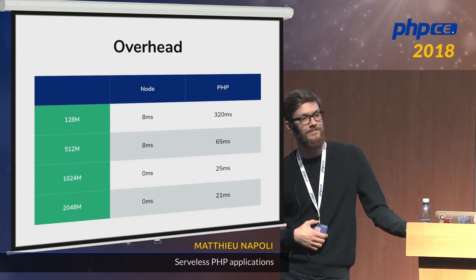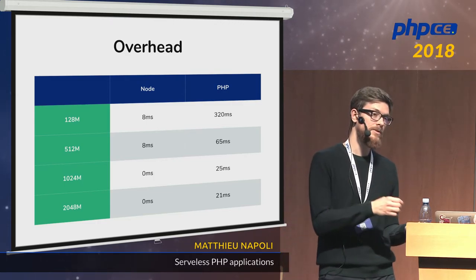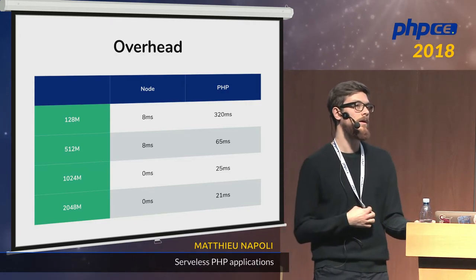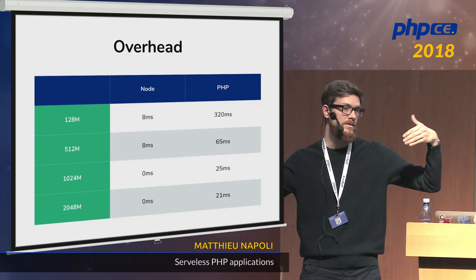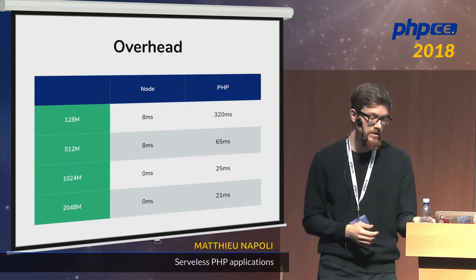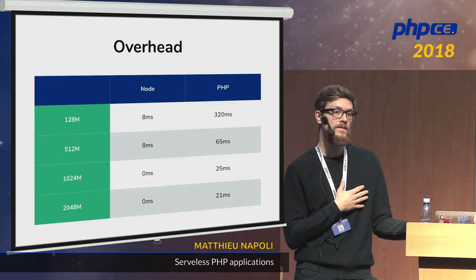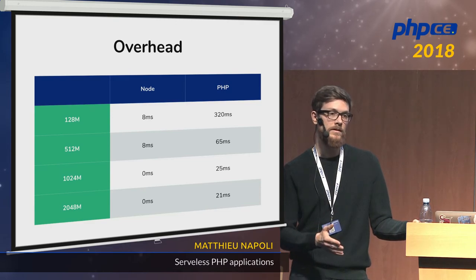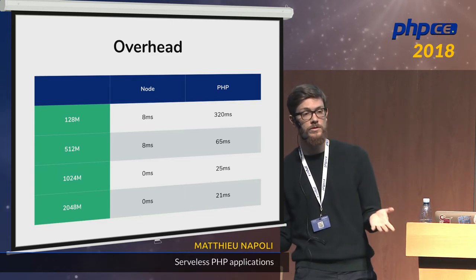Q: Are there plans to support other platforms like Google Cloud Functions? A: Enoptea was actually looking into using Microsoft or Google Cloud. It would impact the bridge between the event and the HTTP request — for example the array keys are different across providers. For the moment I'm focused on Amazon Lambda, which is way more stable and reliable than the other solutions. I welcome any contributions though.